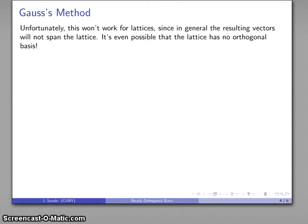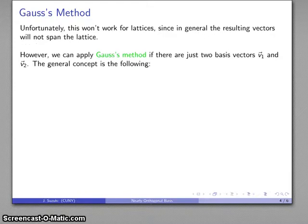In fact, it's even possible that the lattice might not have any orthogonal basis. So trying to find an orthogonal basis for the lattice may be a pointless exercise. So what can we do?